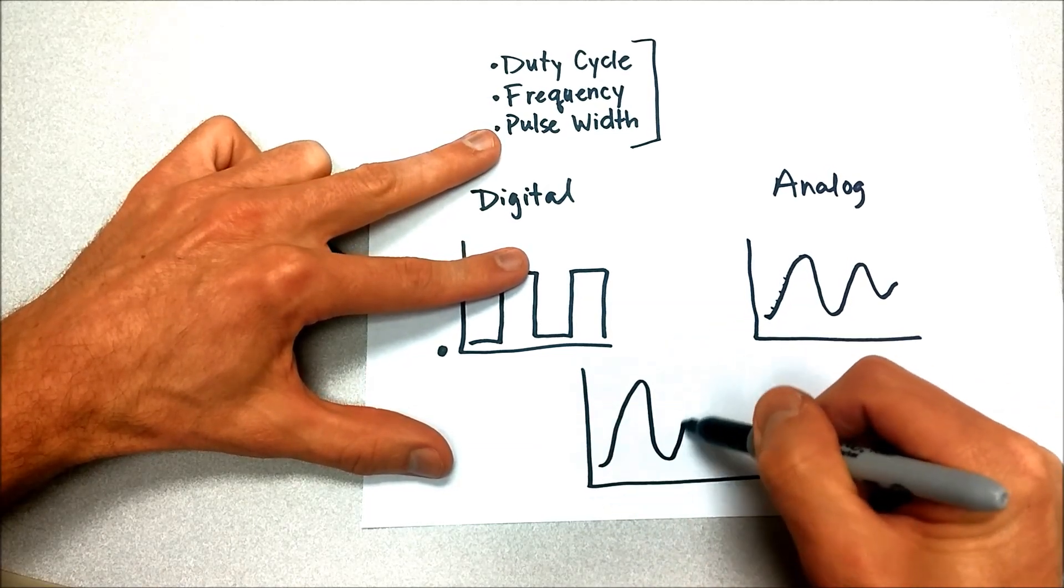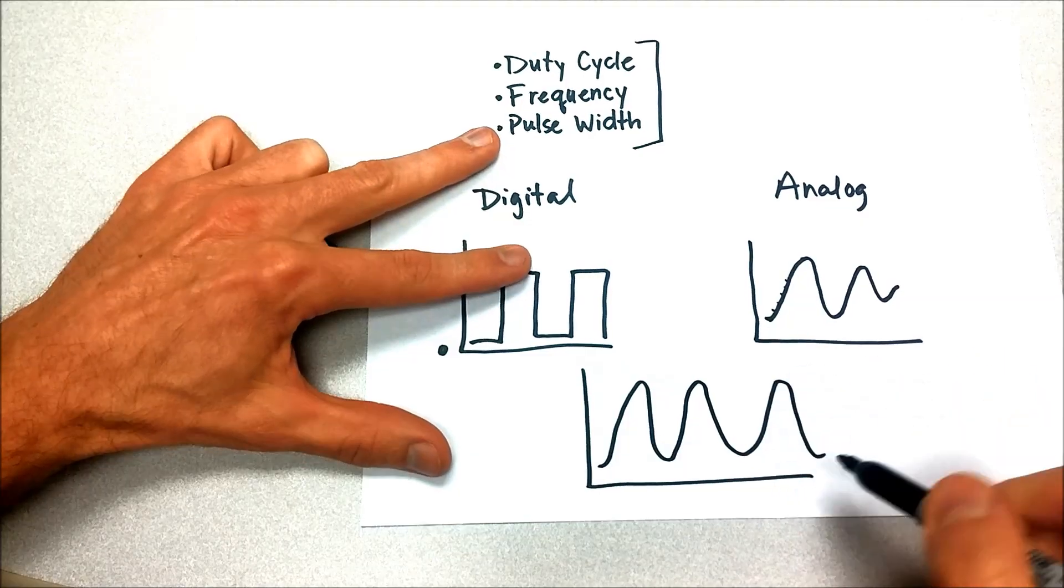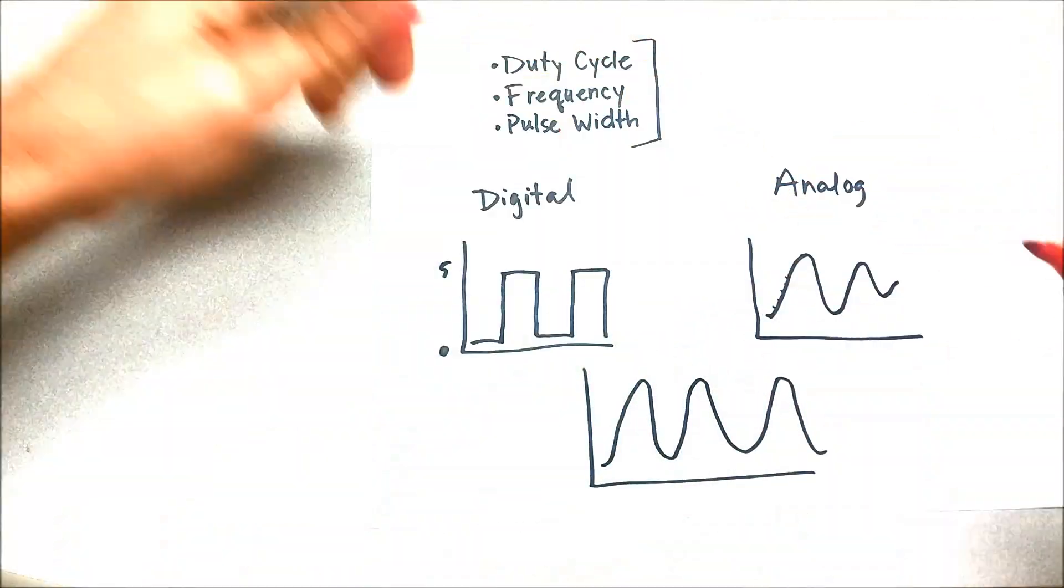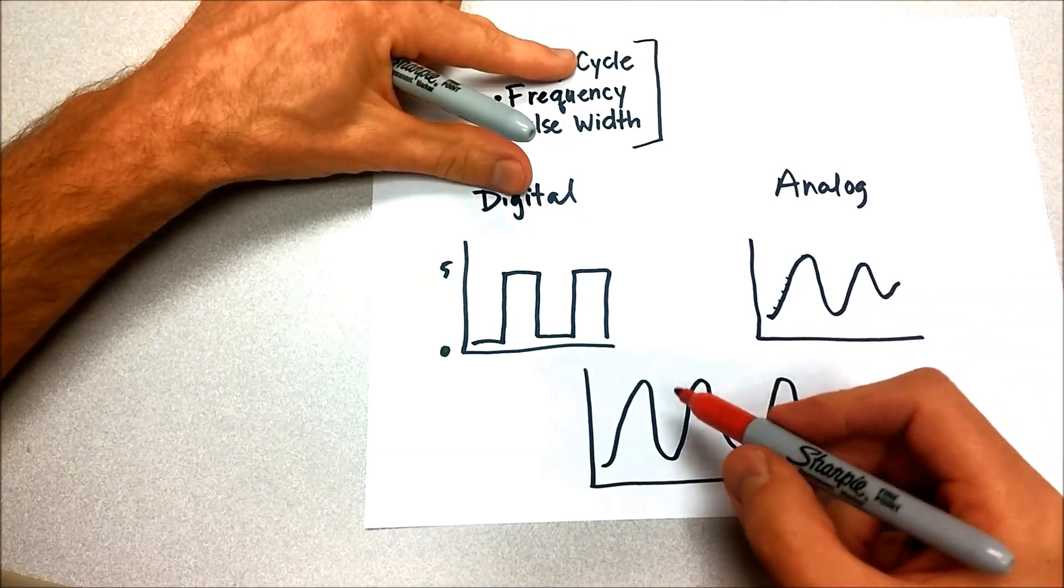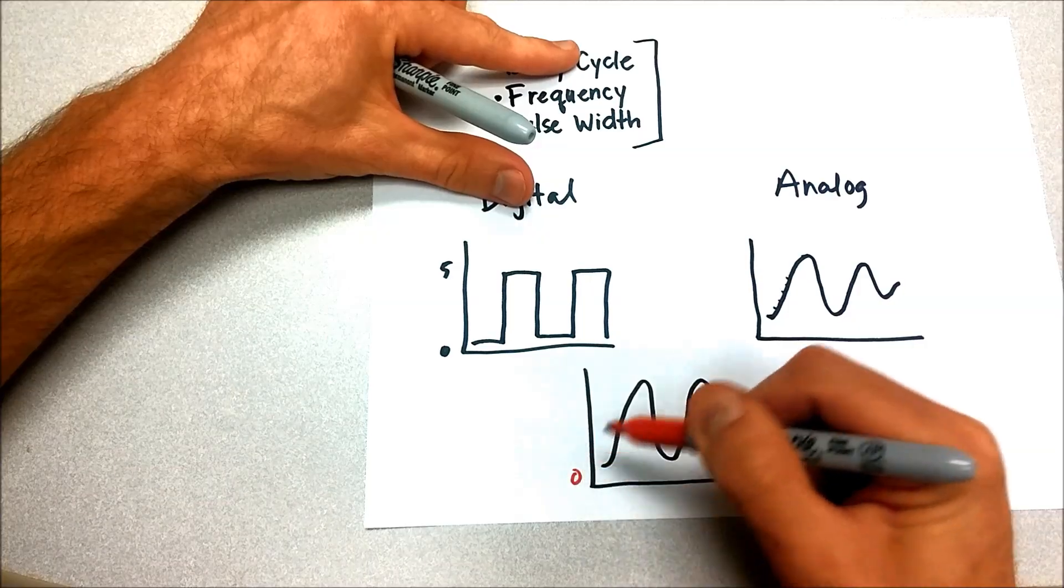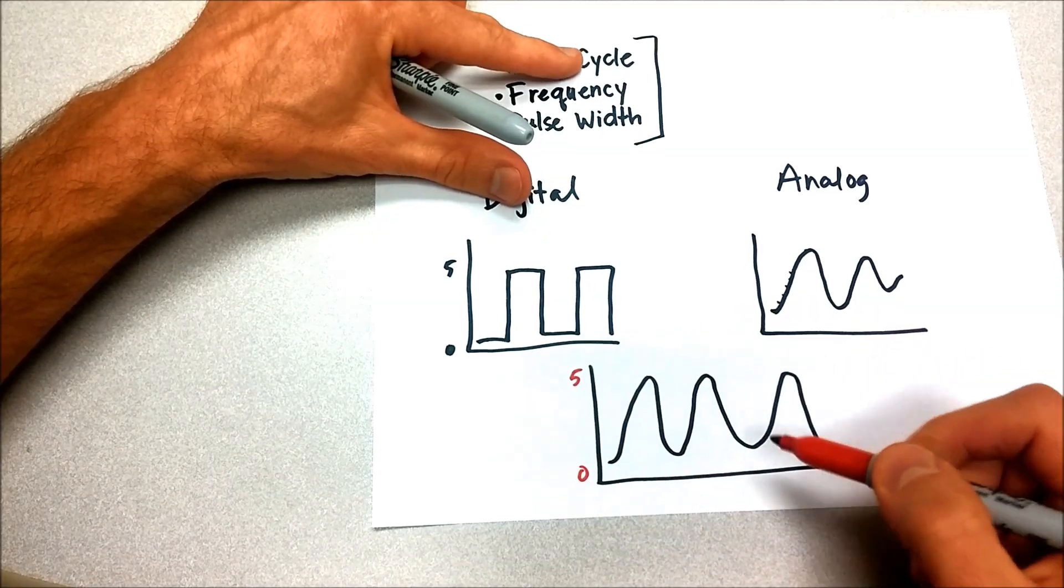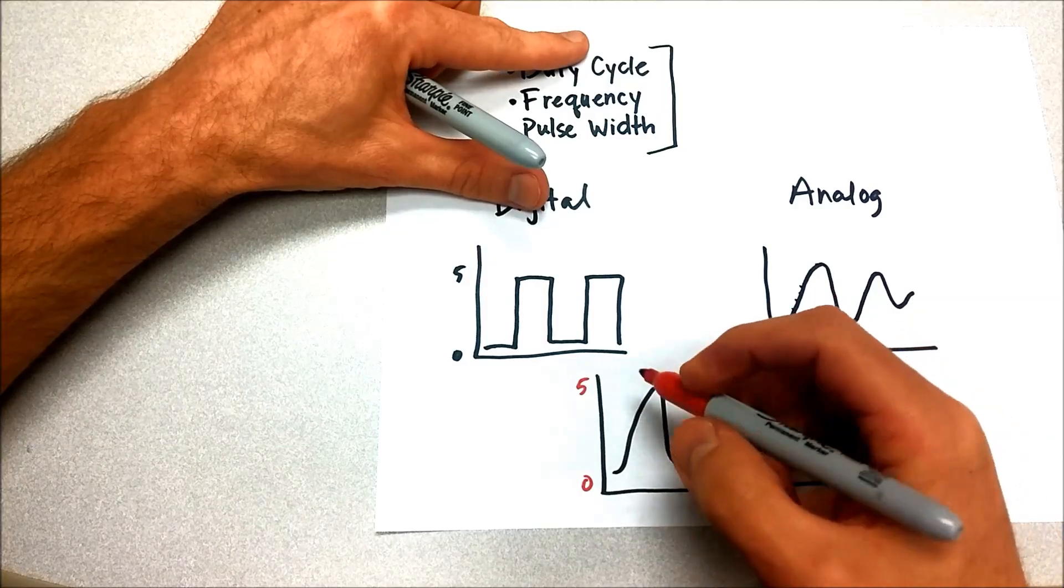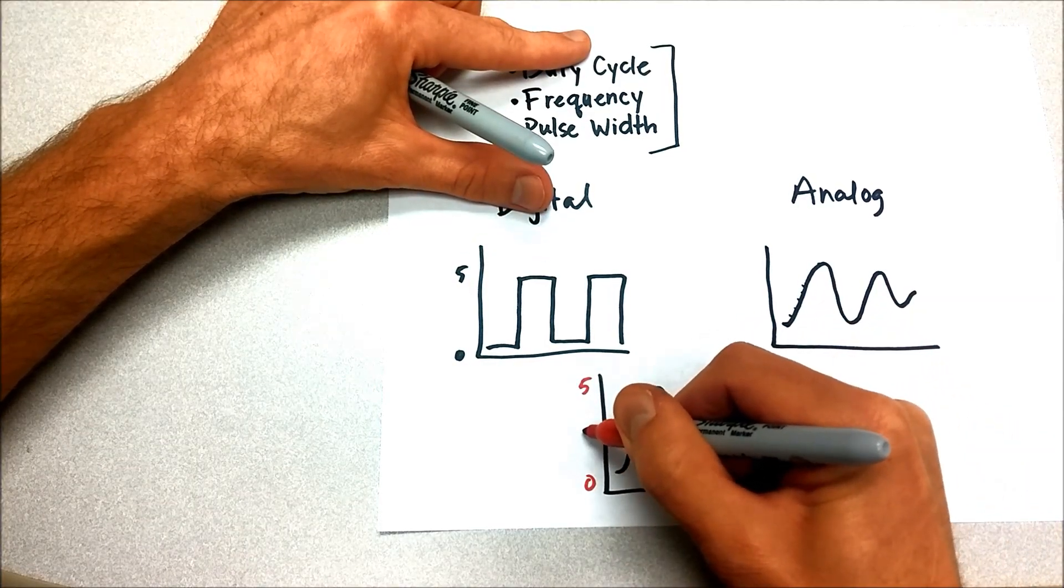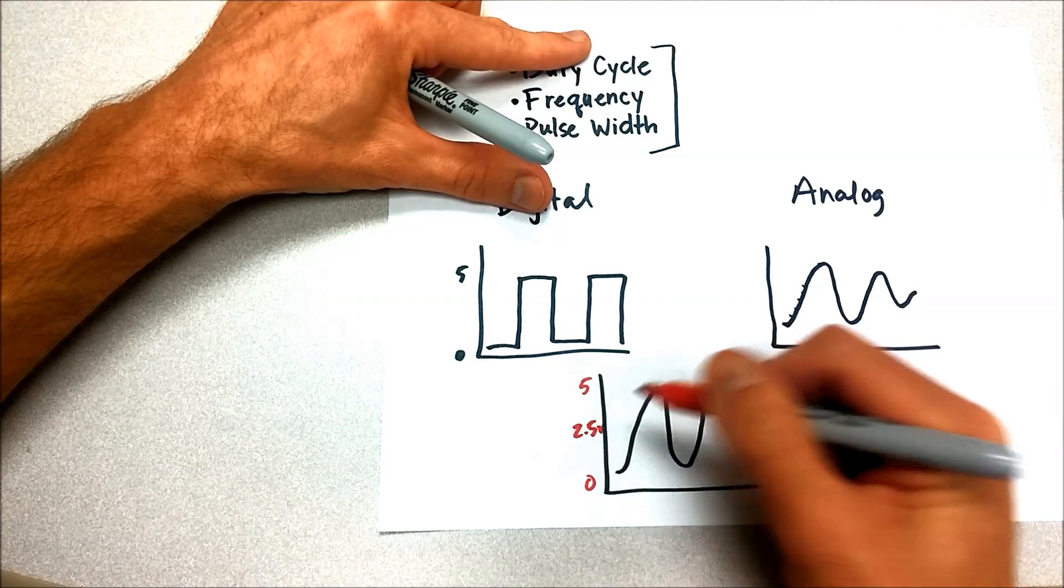If this is our analog signal that's coming in, and it's a waveform that's varying like this, we would set up some kind of a rule, or a threshold, and we might say if this is zero volts down here at the bottom and this is five volts, so we're looking at a five volt scale, the threshold may be 2.5 volts right here in the middle.